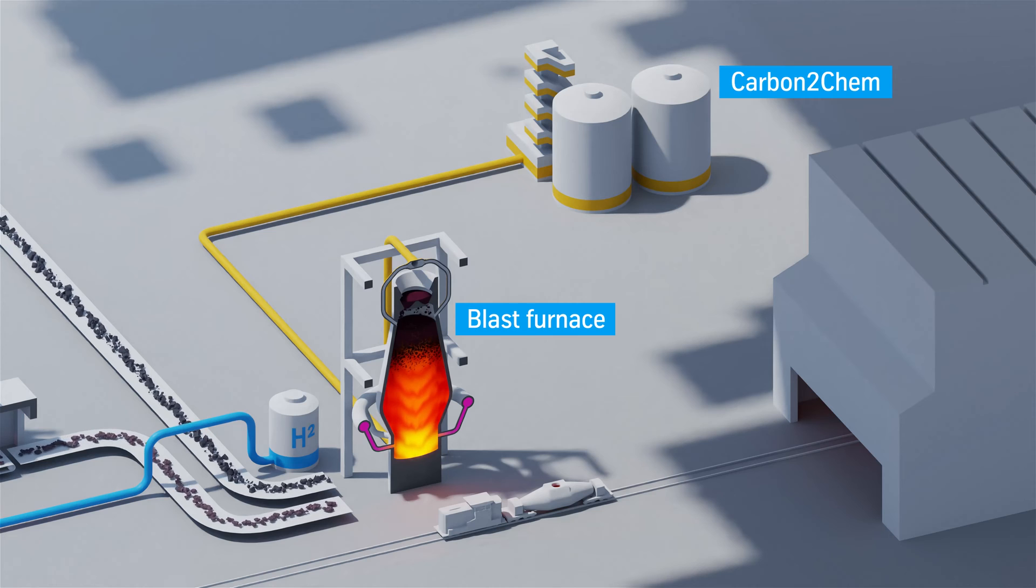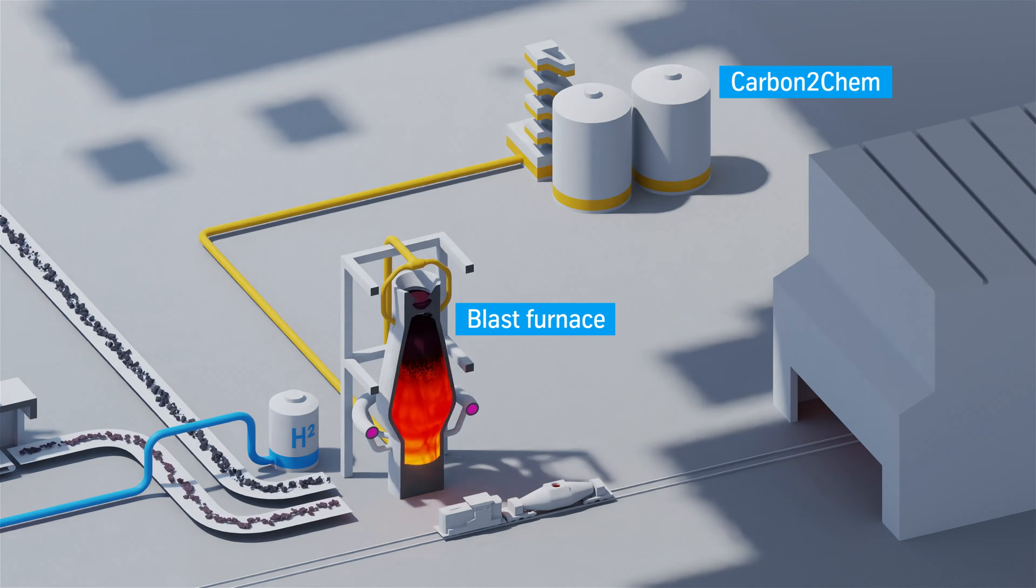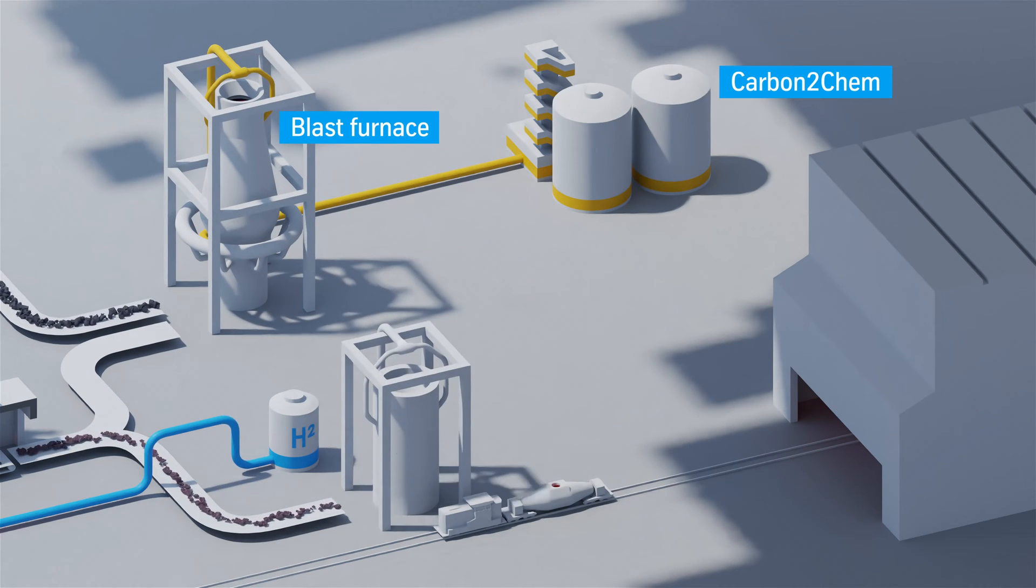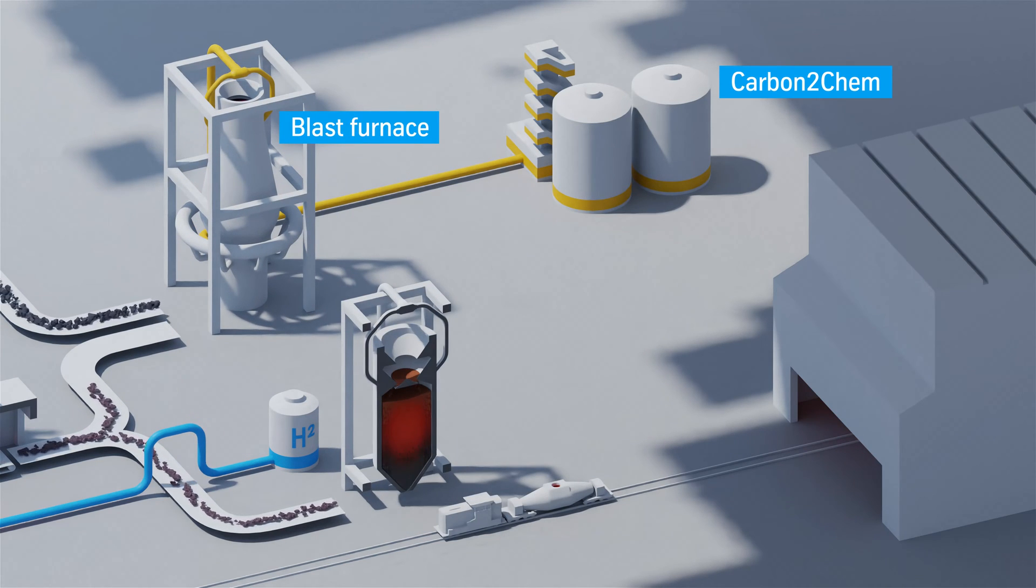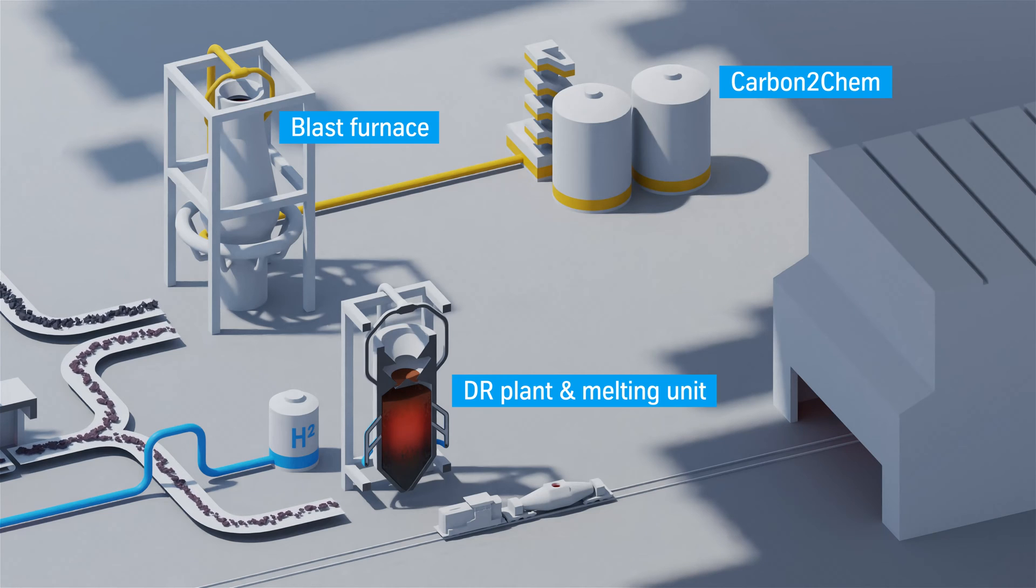In the existing blast furnace, only a limited part of coal can be replaced with hydrogen. We will therefore replace our blast furnaces with new units in the long term—so-called direct reduction plants where the iron ore can be reduced with the help of natural gas or, in a climate-neutral way, with hydrogen.